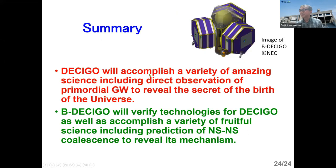So summary, DECIGO will accomplish a variety of amazing science, including direct observation of primordial gravitational waves to reveal the secret of the birth of the universe. B-DECIGO will verify technologies for DECIGO as well as accomplish a variety of fruitful science, including prediction of neutron star-neutron star collisions to reveal its mechanism. Thank you. That's all.